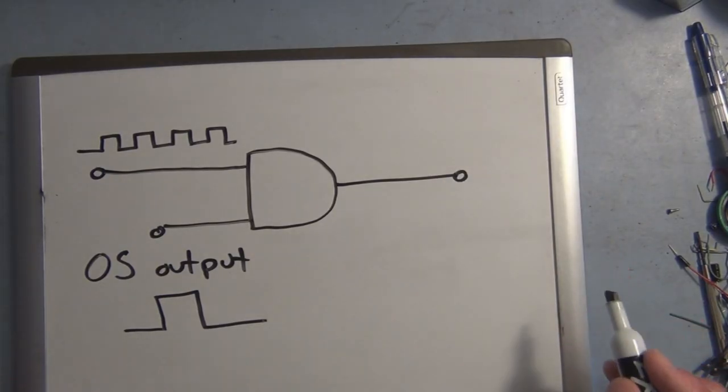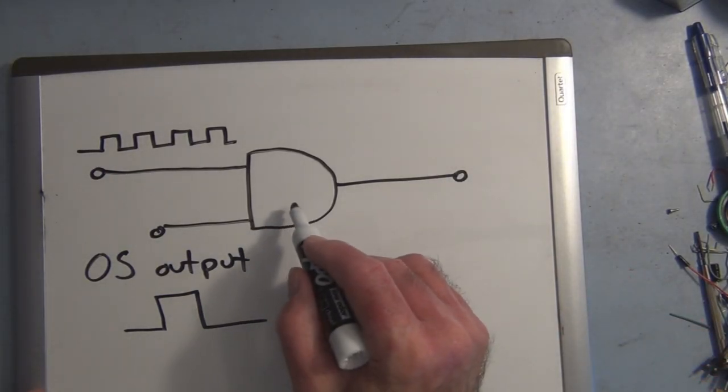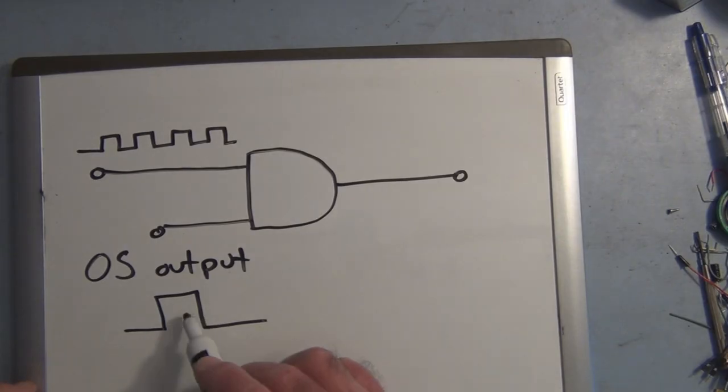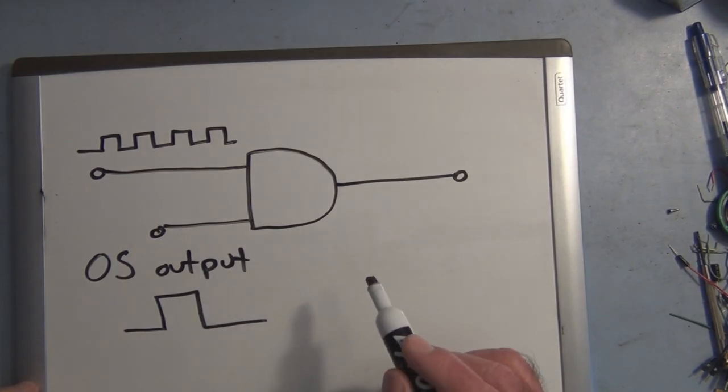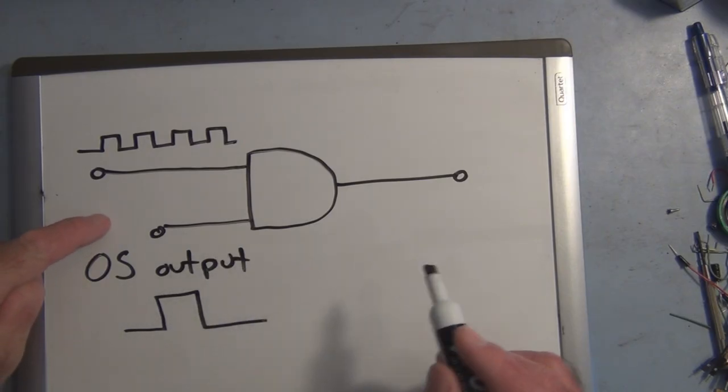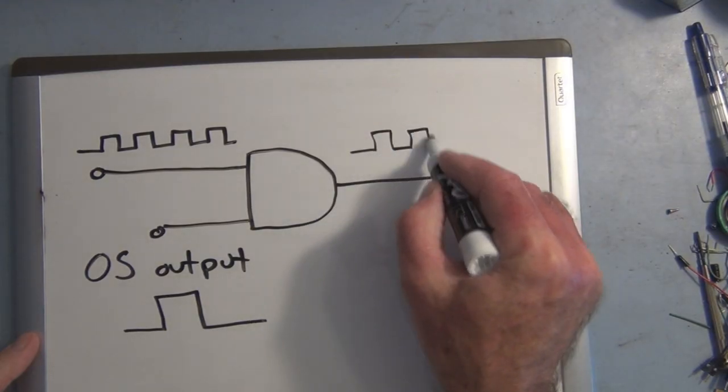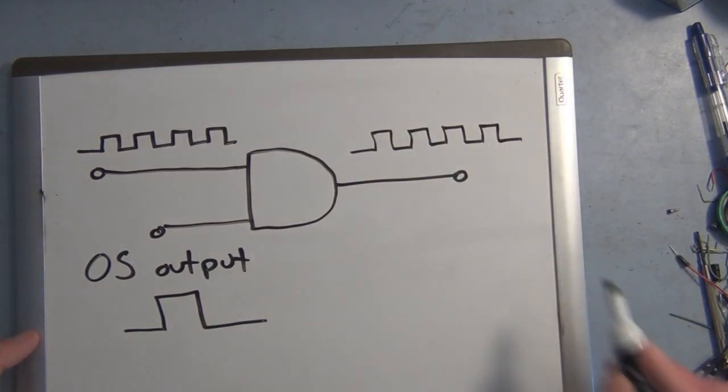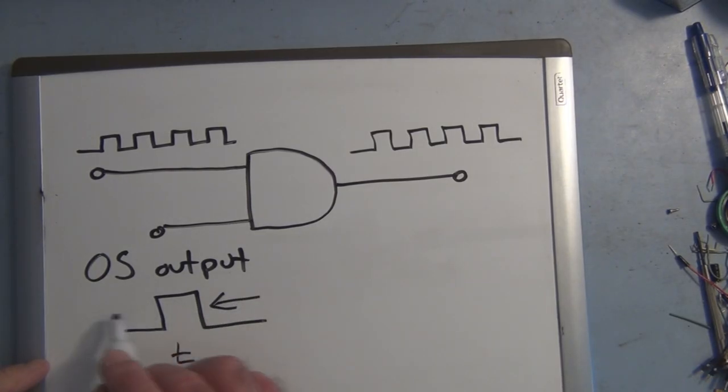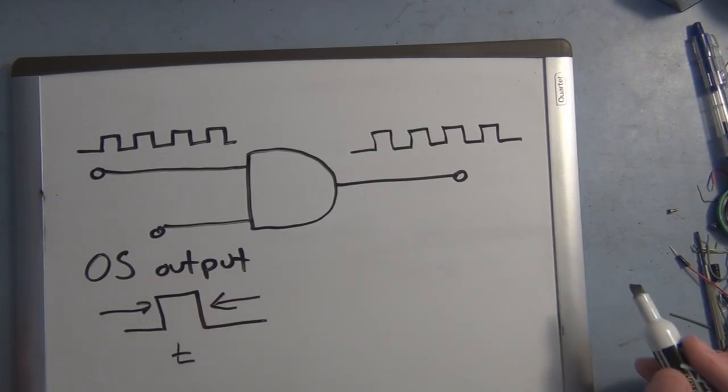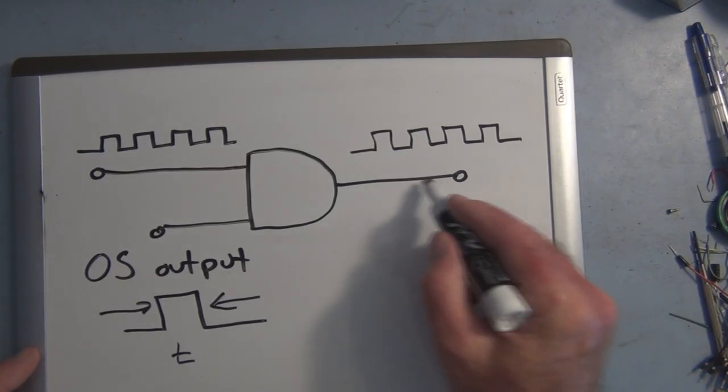I have connected to one input a clock pulse, and the other input is connected to the output, the one shot output which is that timed pulse. And if you think about it, what that does is an AND gate produces a high output only when the inputs are high.